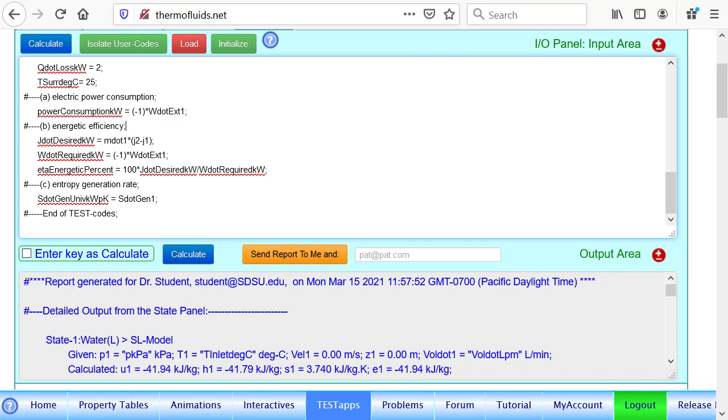In a very similar way we calculate the efficiency. As I said, for that we calculate the j dot. Notice the j dot, j dot desired is j2 minus j1 times m dot one.